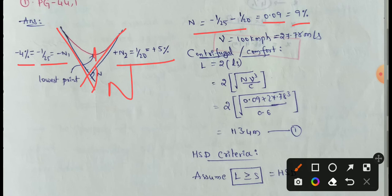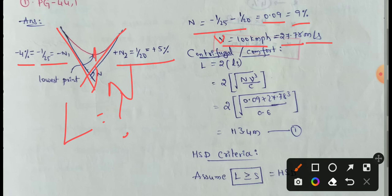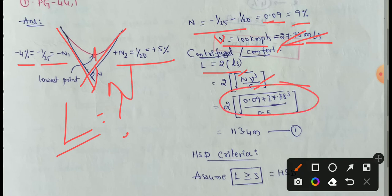First, we apply the Comfort Criteria (centrifugal criteria). The formula is: L = 2 × root of (n × v³ / c). Substituting: n = 0.09, v = 27.78 m/s, c = 0.6. This gives L = 113.4 m. This is the result from the first case (comfort criteria).